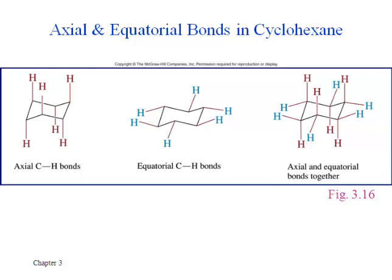Every carbon that has an axial bond that's pointing straight up also has an equatorial bond that's pointing downward at an angle, and the reverse of that is true.